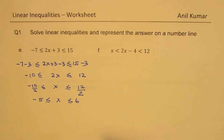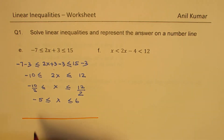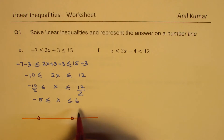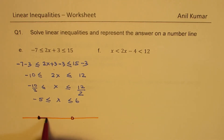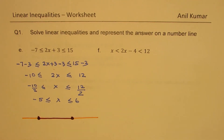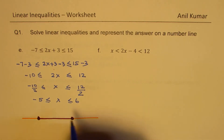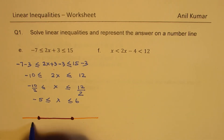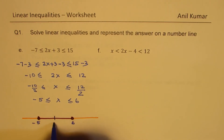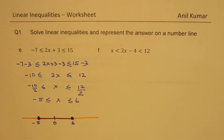On a number line, the solution is between minus 5 and 6, with both endpoints included, so we fill in both circles. Here 0 is somewhere between minus 5 and 6, confirming it is part of the solution.